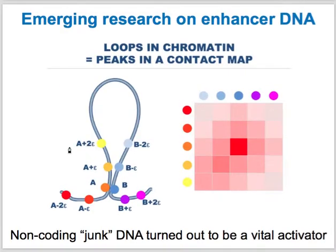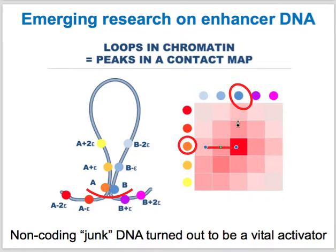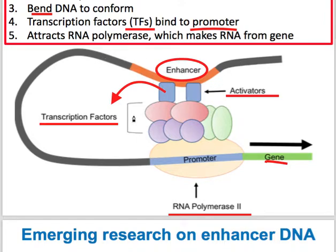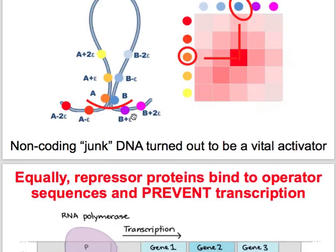Some of the best emerging research involves these DNA contact regions — enhancers. We have technology called Hi-C that can actually map that. Region B is coming into close contact with region A. We're finding that a lot of DNA that is not actually a coding gene — when you change it — ruins genes all over the body, because this isn't junk DNA. It's a vital enhancer or activator of other genes. Sometimes it doesn't even have to be on the same chromosome. So the whole idea of junk DNA is kind of getting thrown out the window.